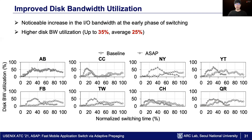Similarly, disk bandwidth utilization is also increased in most cases. One exception is Angry Bird. ASAP's effect on Angry Bird is marginal because Angry Bird uses multiple threads in switch time by default.